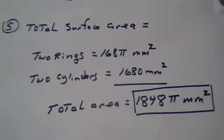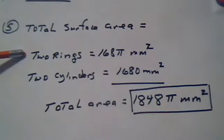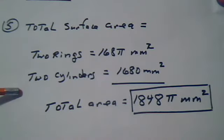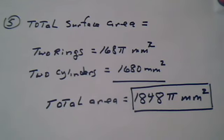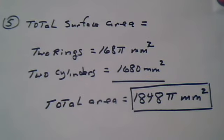Now the total surface area would be the two rings area and the two cylinder areas, which gives you a grand total of 1,848π square millimeters.